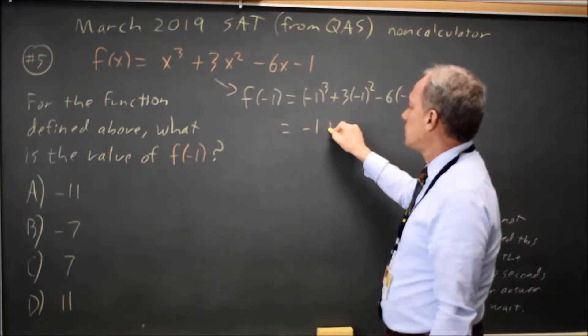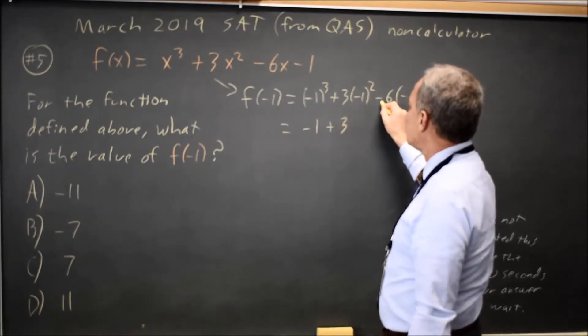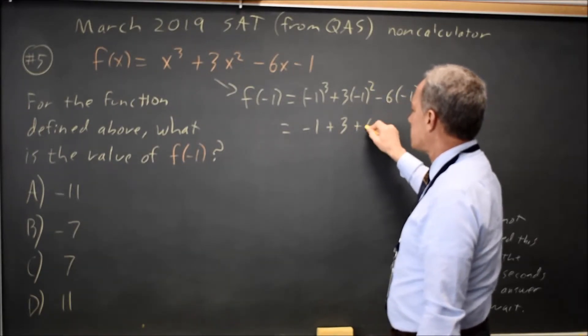Negative 1 cubed is negative 1. Negative 1 squared is 1, and 3 times 1 is 3. Negative 6 times negative 1 is positive 6.